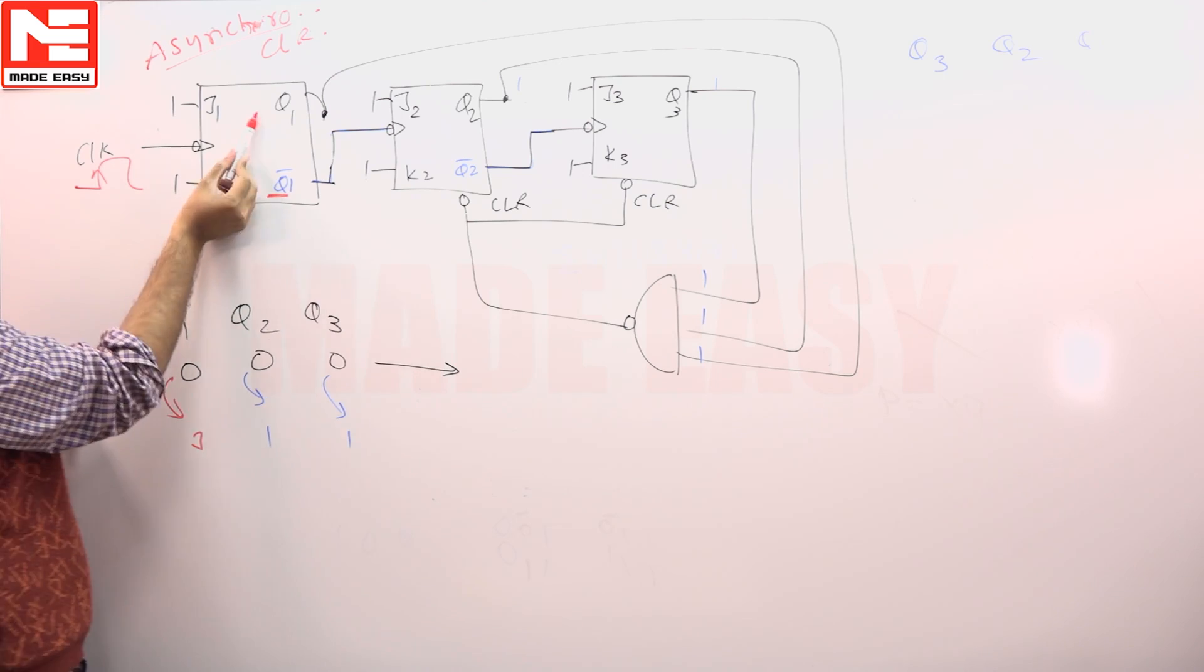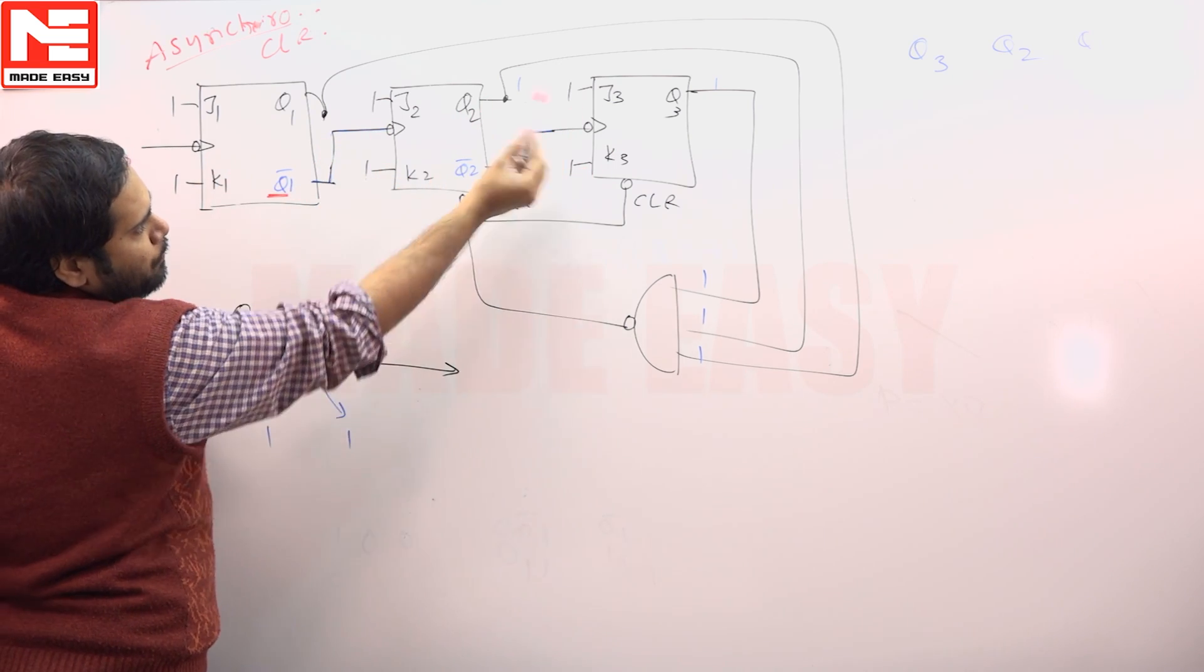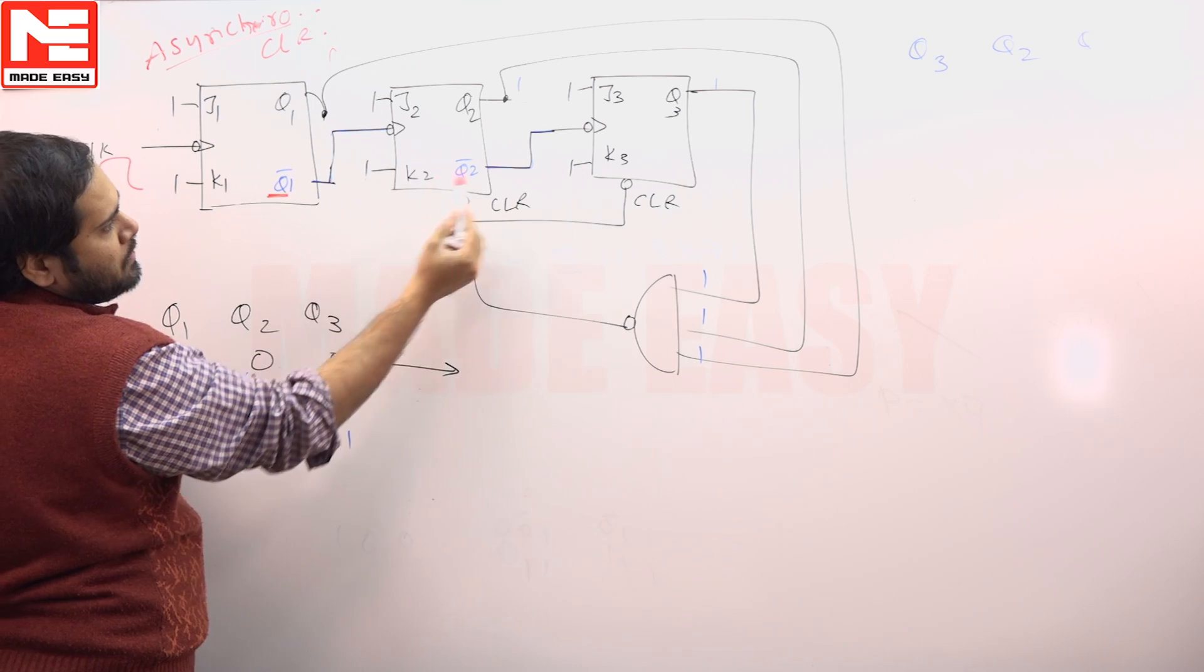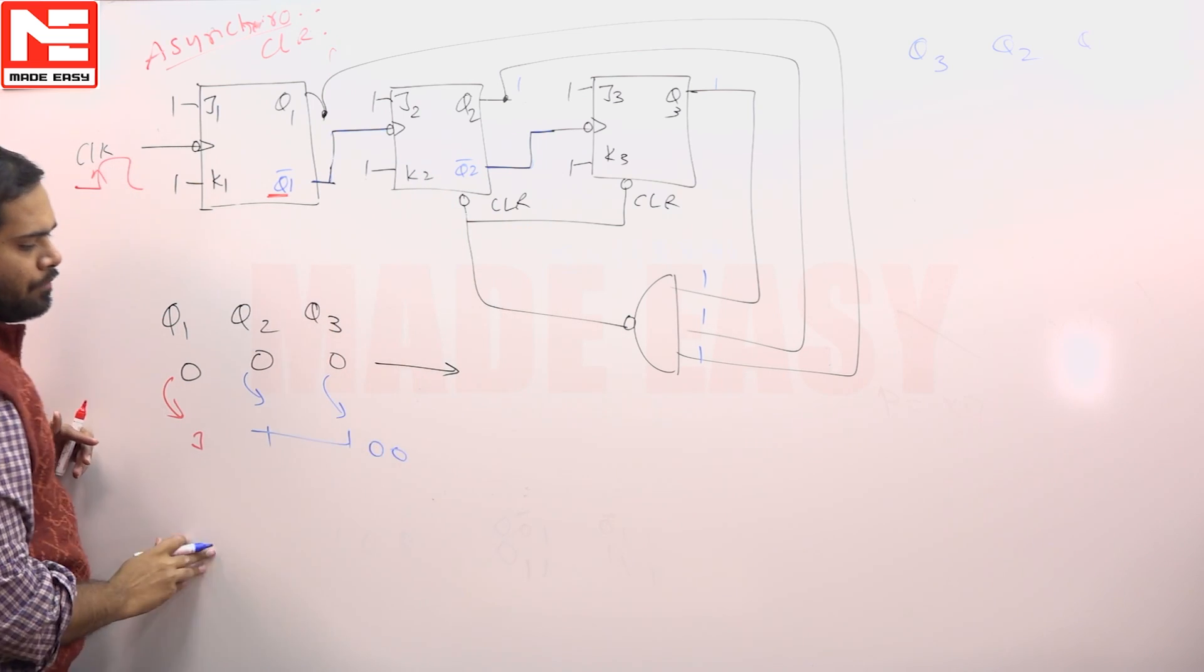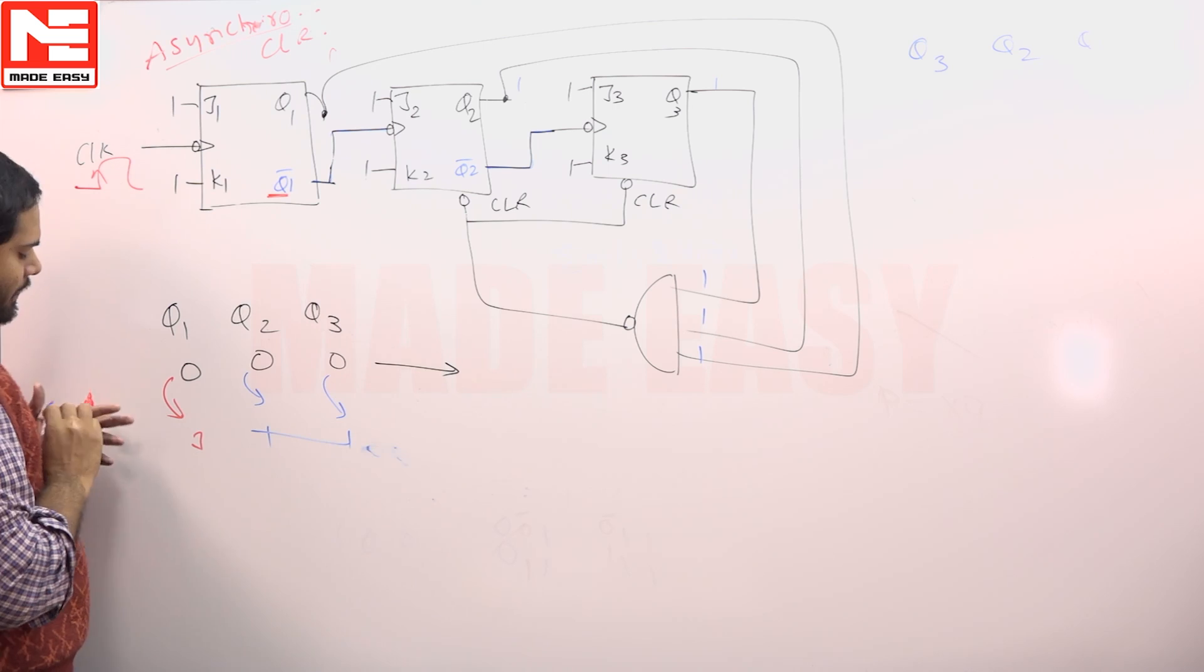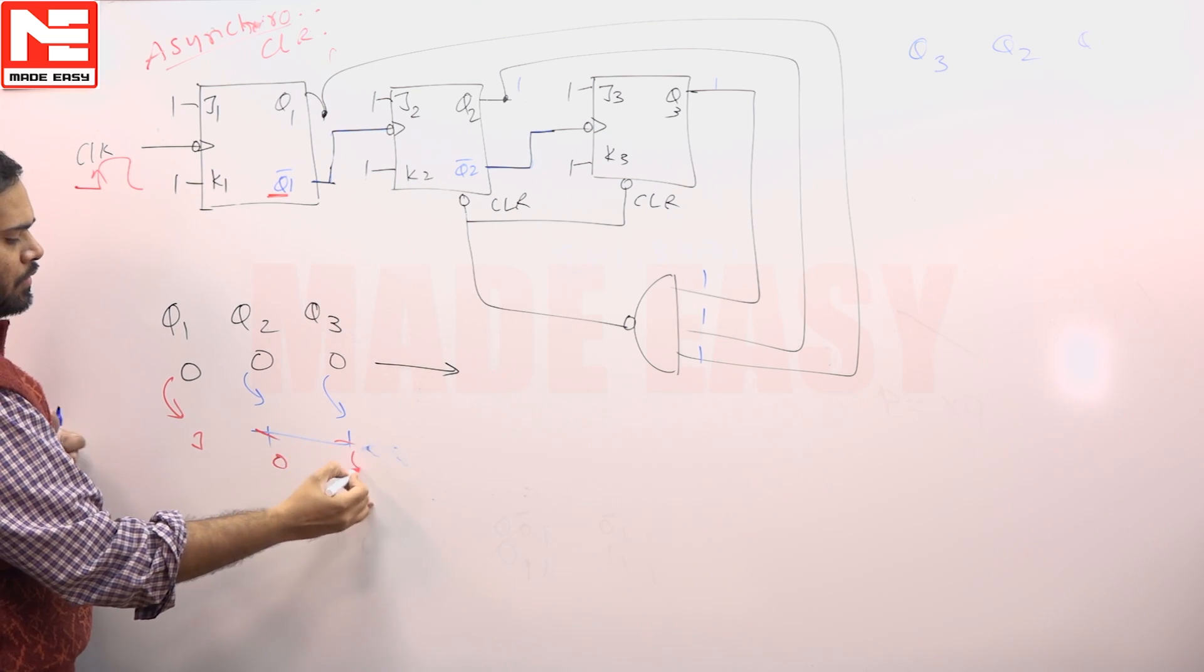So what is actually happening: when this toggles from 0 to 1, this is also getting toggled, this is also getting toggled. They are producing 1 and 1. All three of them are 1, so this is going to get cleared. So the system will go to 0 0. Both will get cleared to 0 0.